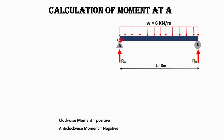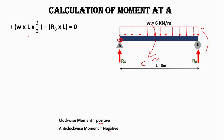To calculate the moment at point A, the sum of moments acting on A will be zero. We will consider clockwise moment as positive and anti-clockwise moment as negative. The uniformly distributed load will bend the beam in the clockwise direction, and the support reaction Rb will resist the bending moment in the anti-clockwise direction. One direction must be positive and the other negative.